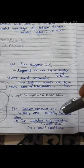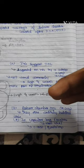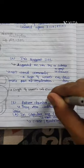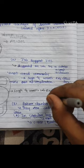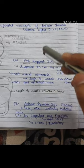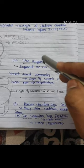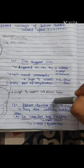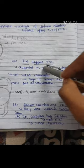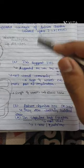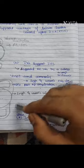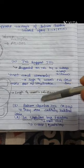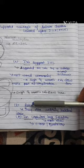Third is posterior chamber intraocular lenses, which are entirely behind the iris. These are the most commonly used intraocular lenses. Anterior chamber and iris-supported lenses are not used nowadays; they are used only when there is a contraindication to posterior chamber intraocular lenses.